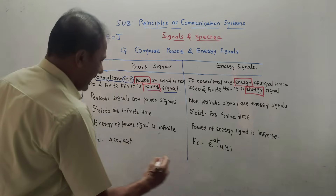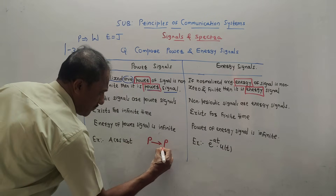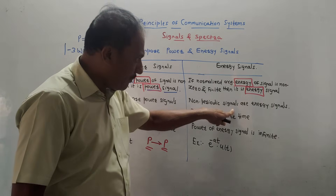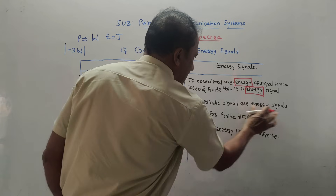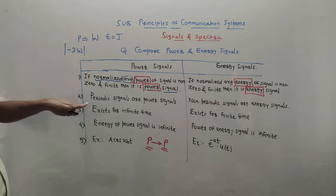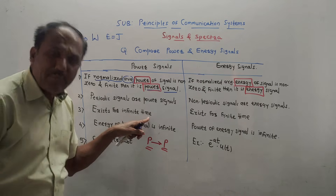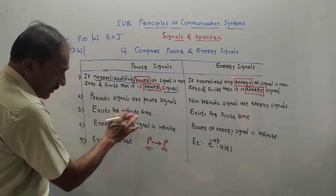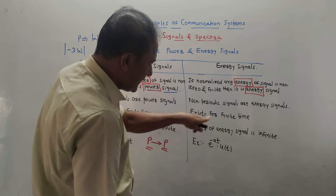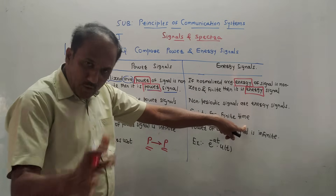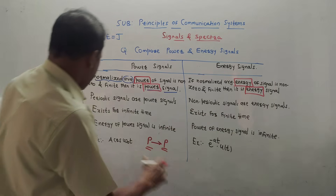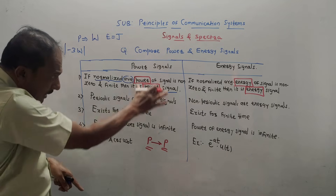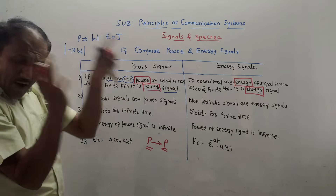The second difference: all periodic signals are power signals. Remember it like this — P for periodic and P for power. So all periodic signals are power signals, and naturally all non-periodic signals are energy signals. The third difference: power signals exist for an infinite time period ideally — keep in mind the example of a bulb or tube light. Whereas energy signals exist for a finite time period — remember the example of a mobile battery.